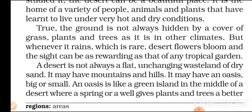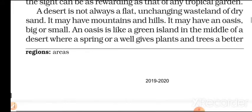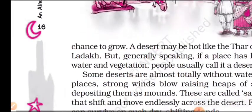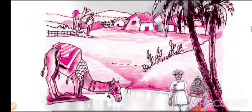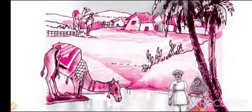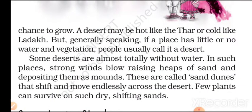A desert is not always a flat, unchanging wasteland of dry sands. It may have mountains and hills; it may have an oasis, big or small. An oasis is like a green island in the middle of a desert where a spring or a well gives plants and trees a better chance to grow. A desert may be hot like the Thar, or cold like Ladakh, but generally speaking, if a place has little or no water and vegetation, people usually call it a desert.